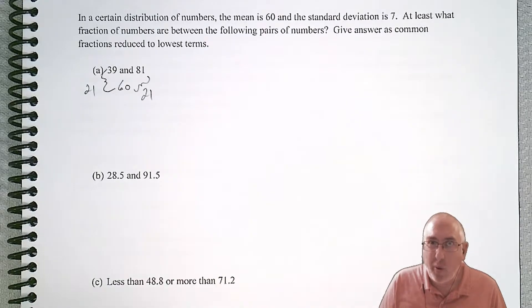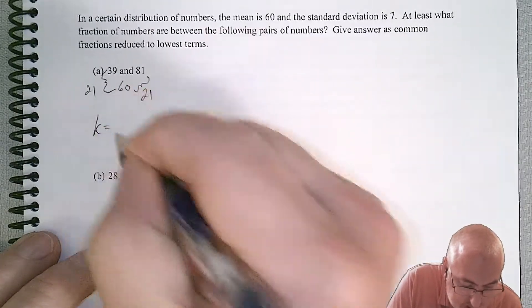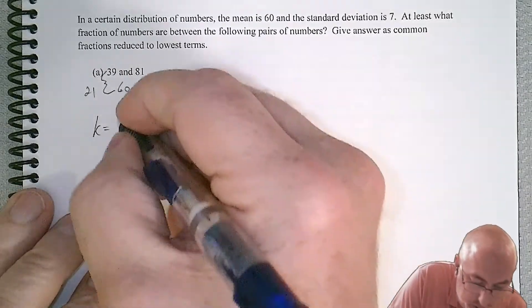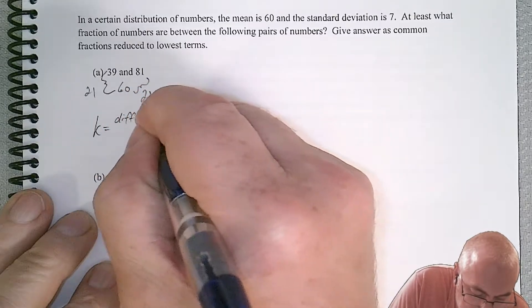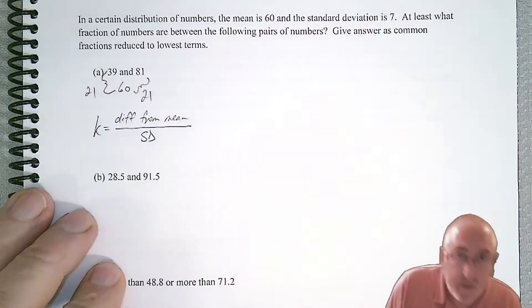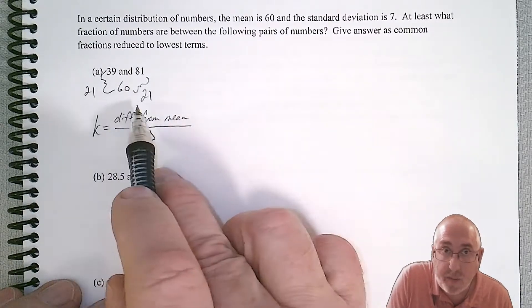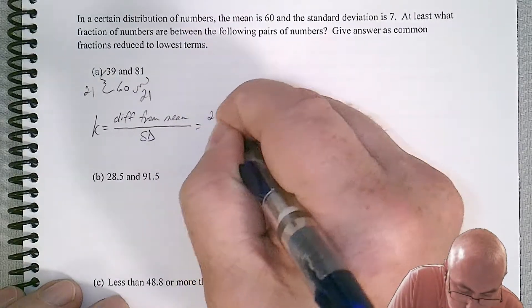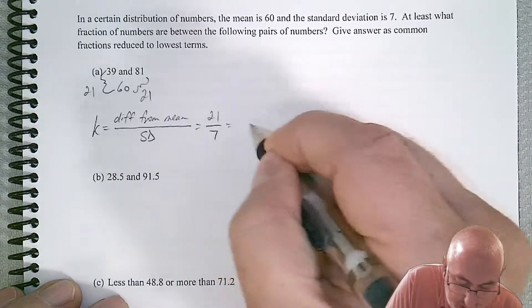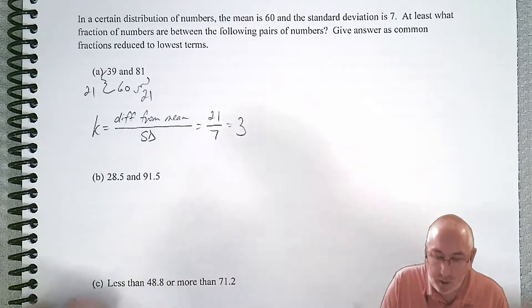So now what do we do with that 21? How does that help us find k? I'm going to introduce a formula that's not in the textbook, and it helps you find the value of k. k is going to be found by finding that difference from the mean and dividing by the standard deviation. So in this problem, we found that difference from the mean, which was 21, and now our standard deviation was 7. So all we have to do is put it over 7, and we get a nice answer of 3. So k is equal to 3.